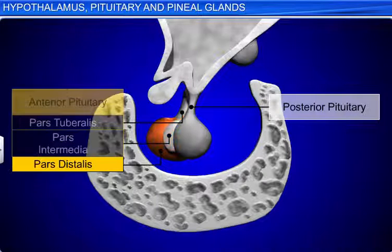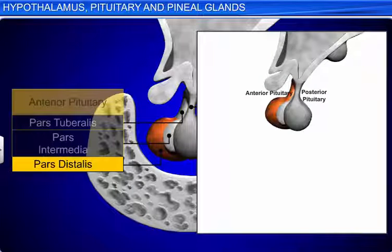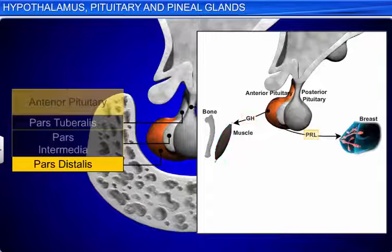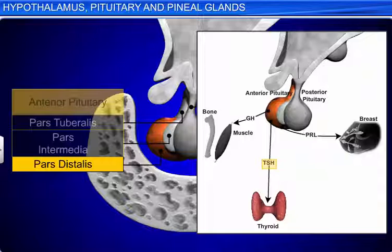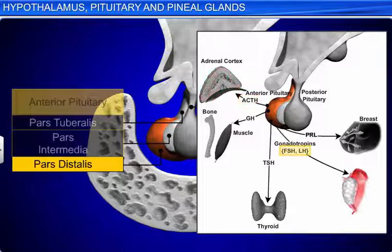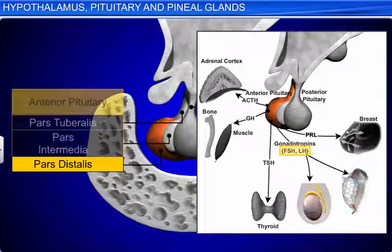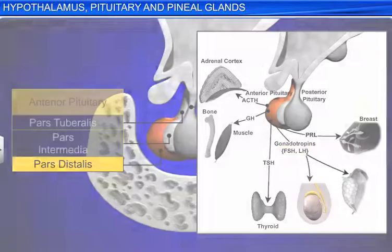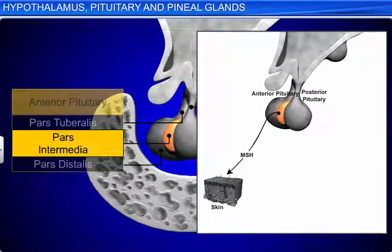The pars distalis produces several important hormones: growth hormone (GH), prolactin (PRL), thyroid stimulating hormone (TSH), adrenocorticotrophic hormone (ACTH), luteinizing hormone (LH), and follicle stimulating hormone (FSH). The pars intermedia secretes only one hormone called melanocyte stimulating hormone (MSH).